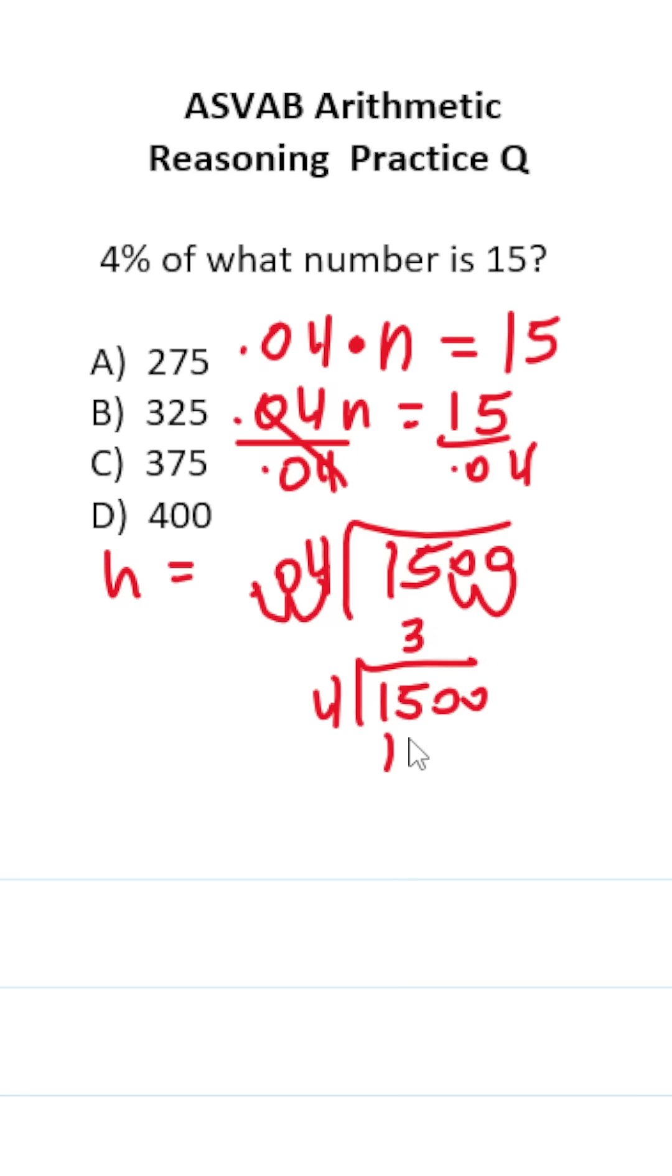4 times 3 is 12. 15 minus 12 is 3. Bring down the 0. 4 times 7 is 28. 30 minus 28 is 2. Bring down the 0. 4 times 5 is 20. No remainder.